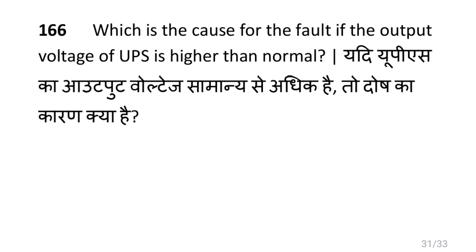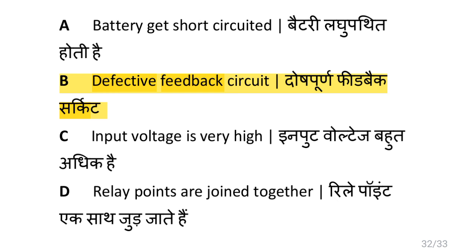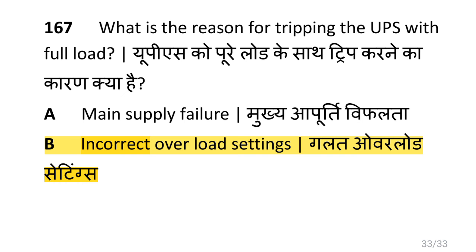Which is the cause for the fault if the output voltage of UPS is higher than normal? i.e. defective feedback circuit. What is the reason for tripping the UPS with full load? i.e. incorrect overload setting.